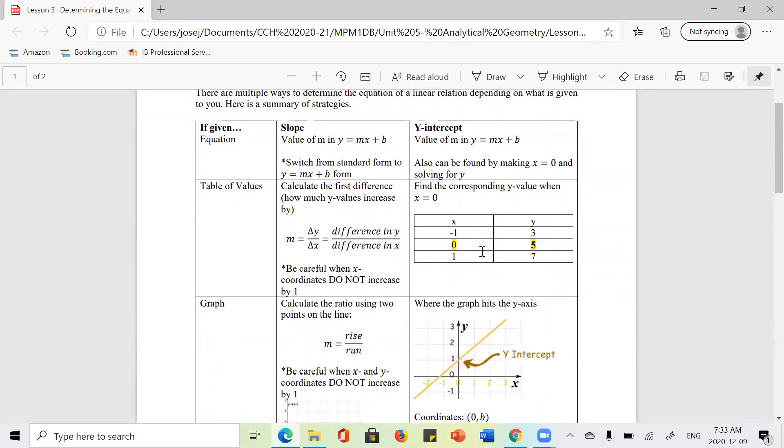You're going to notice that the first couple of points here, talking about how to find the slope and y-intercept if you're given an equation, table values, and a graph, is all reviewed from before. Obviously in an equation, you can easily tell what the slope and y-intercept is by looking at the m and b coefficients.